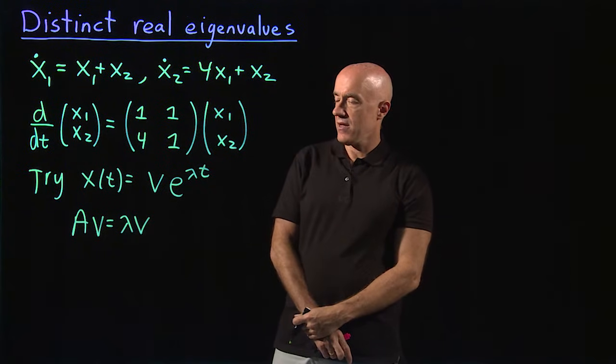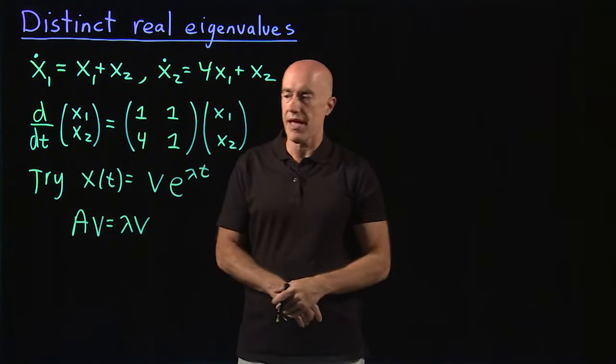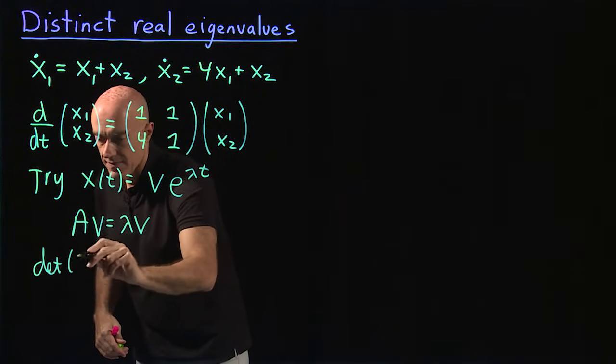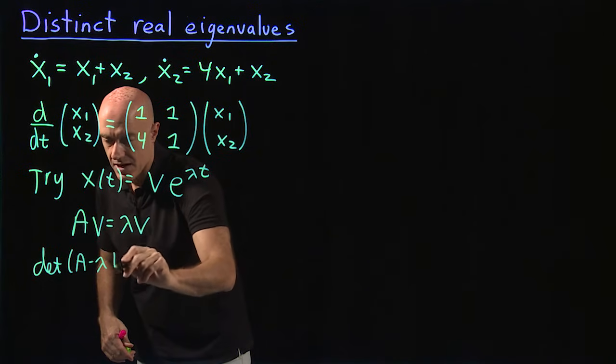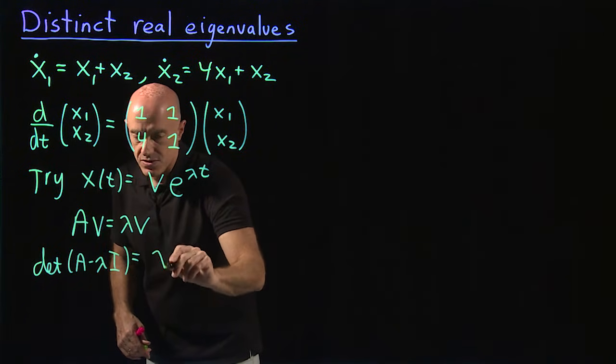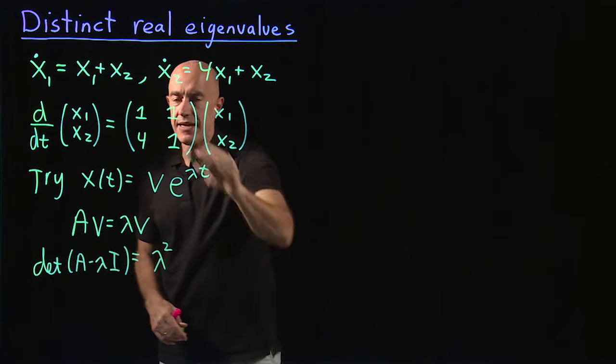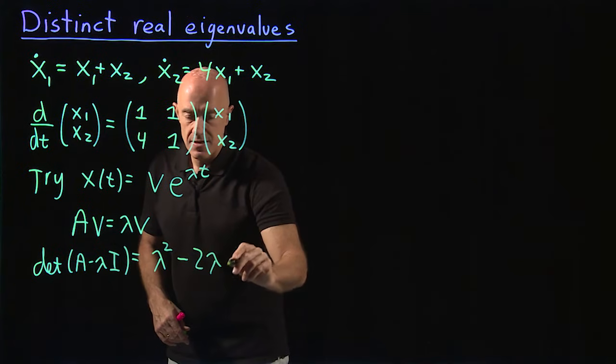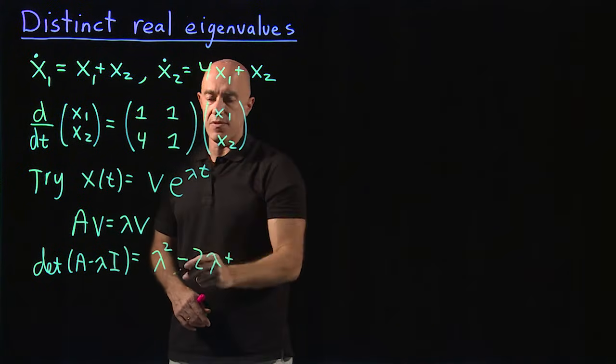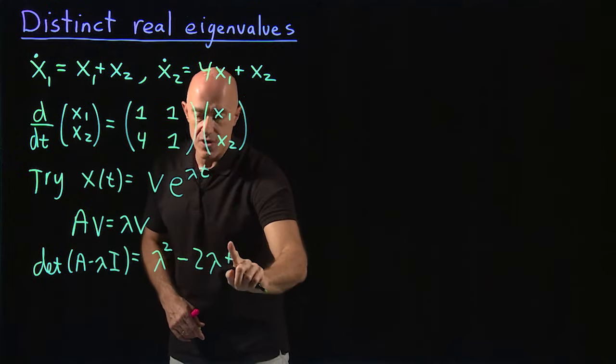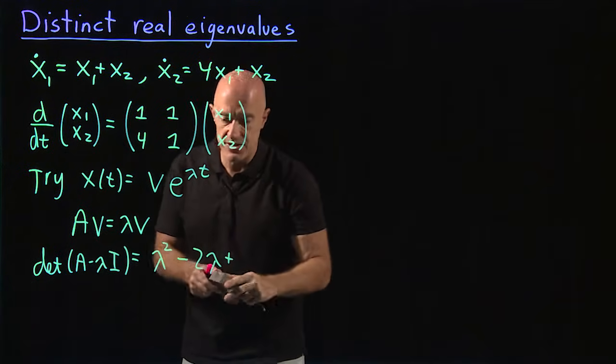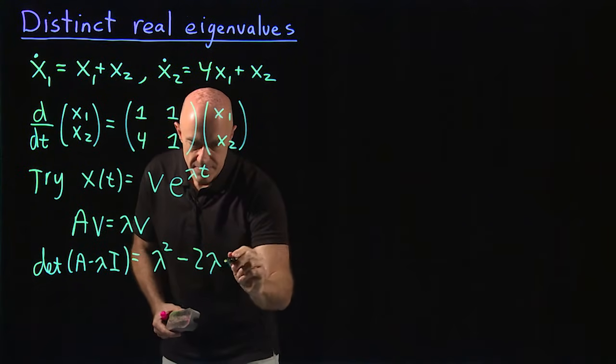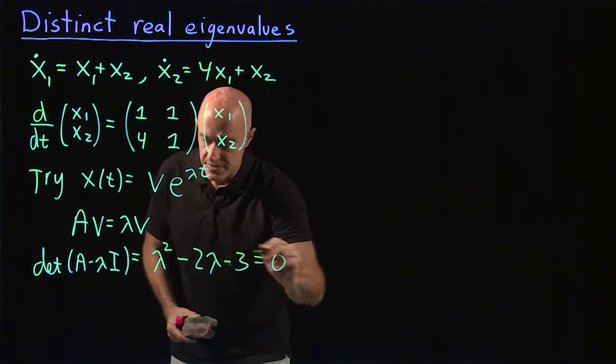To solve that, we need to first find the two lambdas. So we have the determinant of A minus lambda I. That's equal to lambda squared minus the trace of the matrix, so minus 2 lambda plus the determinant of the matrix is 1 minus 4, so that should be a minus sign, 1 minus 3 equals 0.